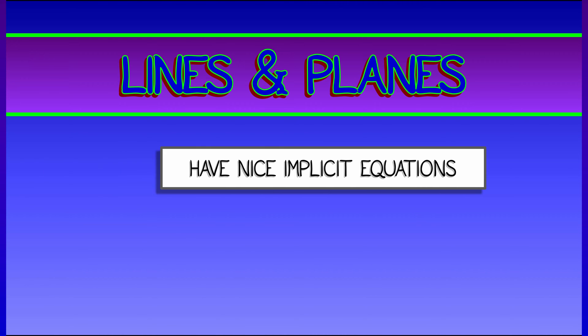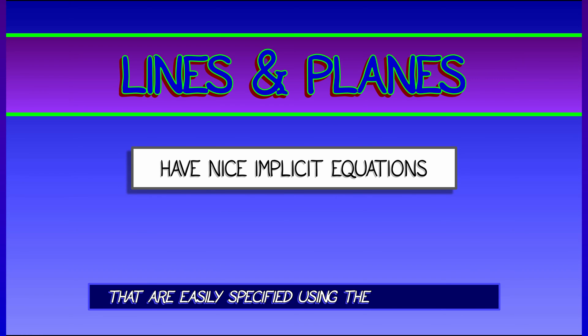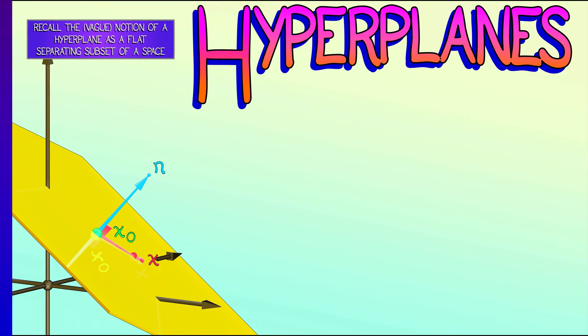One of the things that the dot product is so good for is making sense of some of the implicit equations we've used for lines, planes, and hyperplanes.